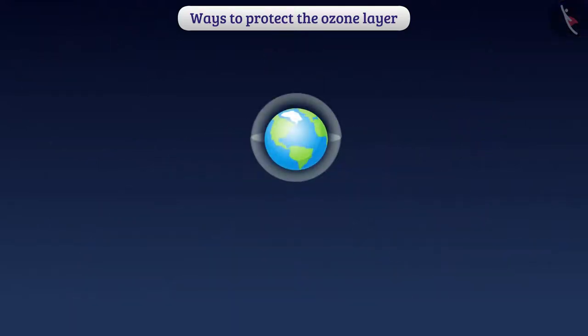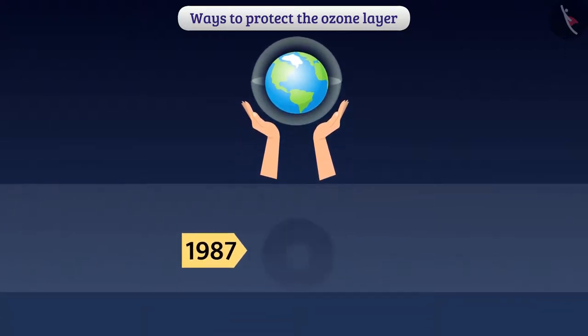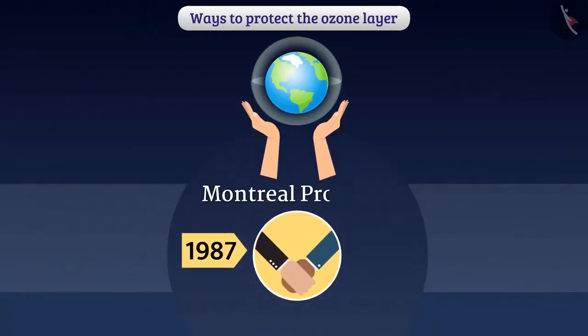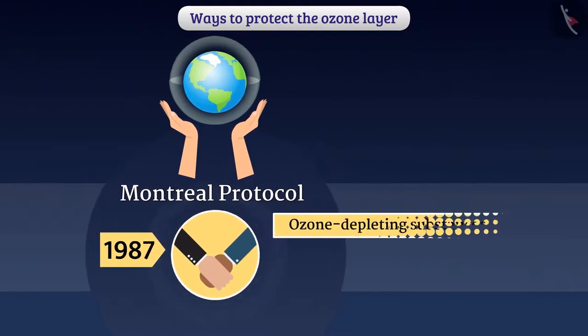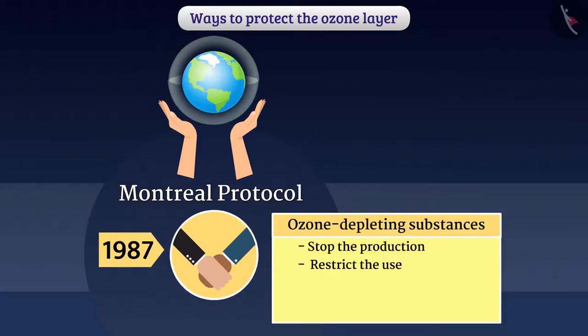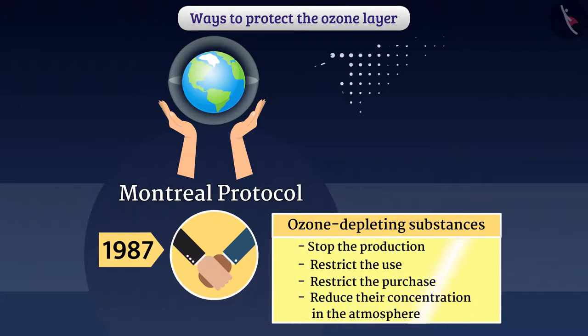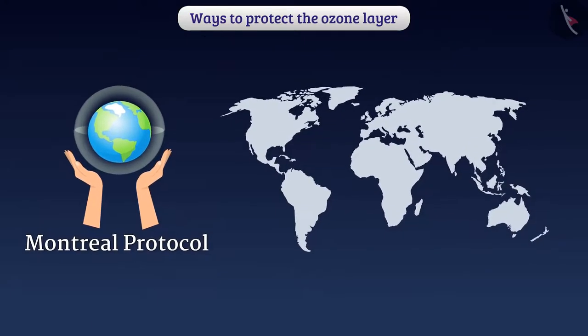It is our responsibility also to protect the ozone layer. In 1987, under the Montreal Protocol, a treaty was signed in various countries in which decisions were made to stop the production, restrict the use and purchase of ozone-depleting substances and to reduce their concentration in the atmosphere. After this, various countries are working together to save the ozone layer. We can also play a role in this work.